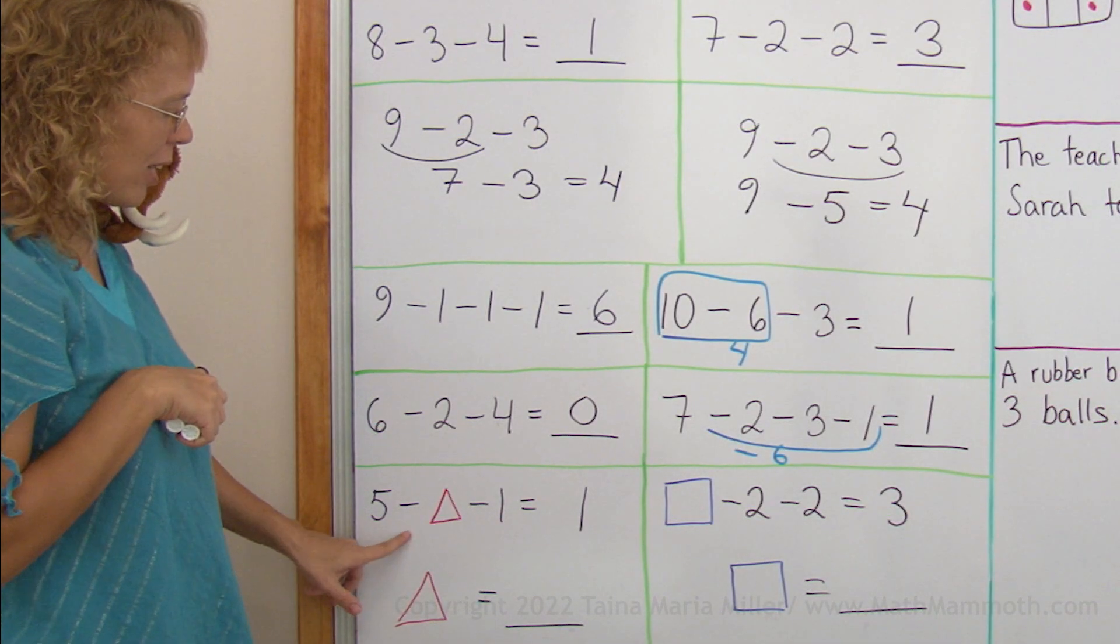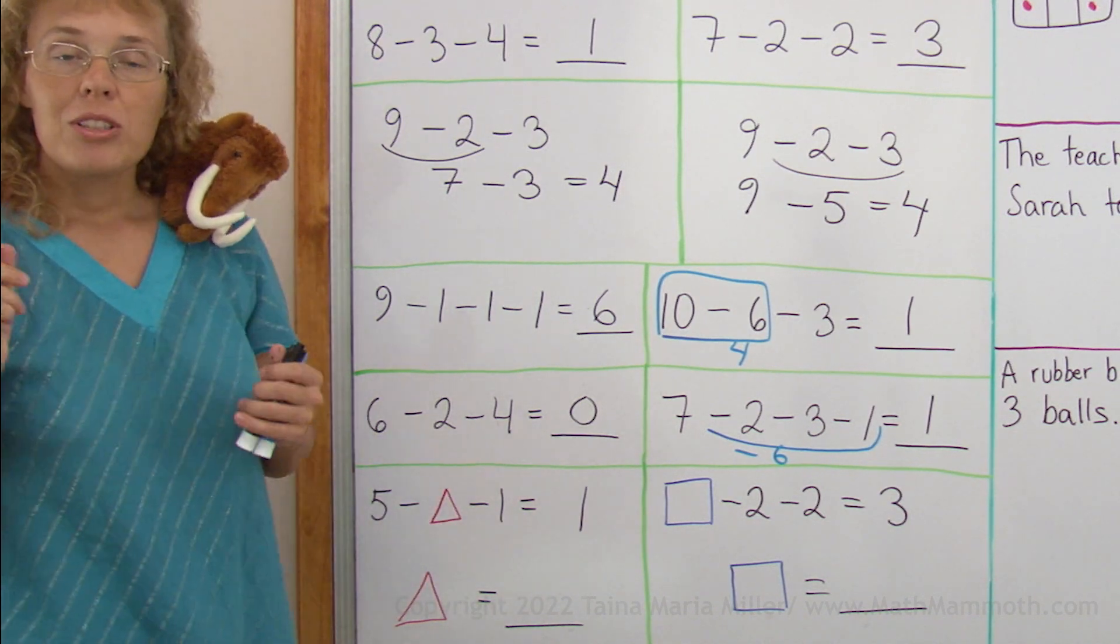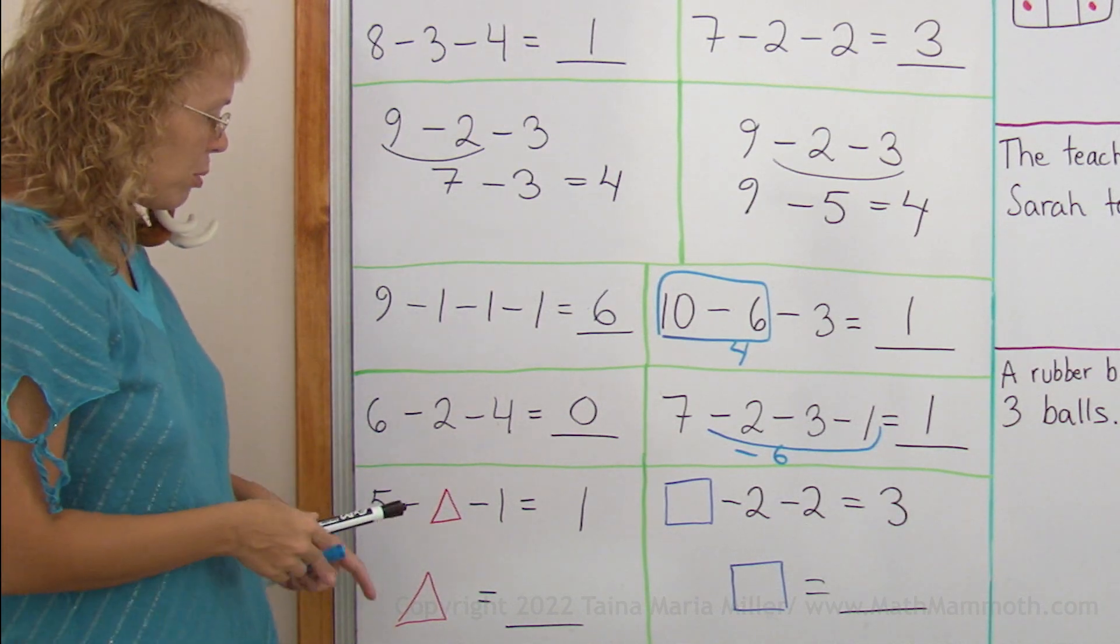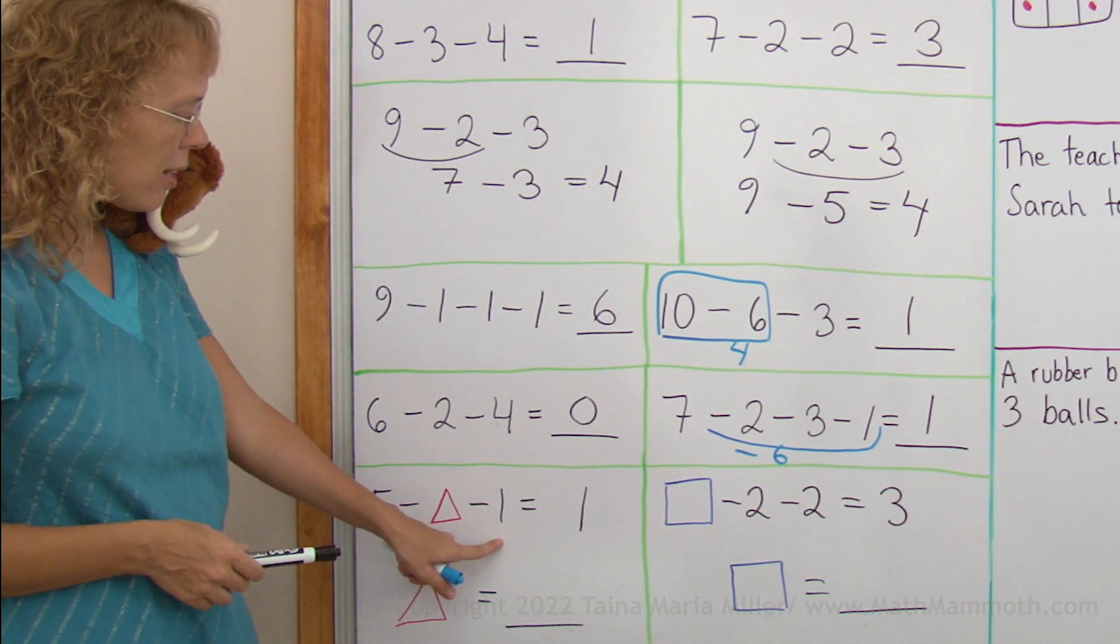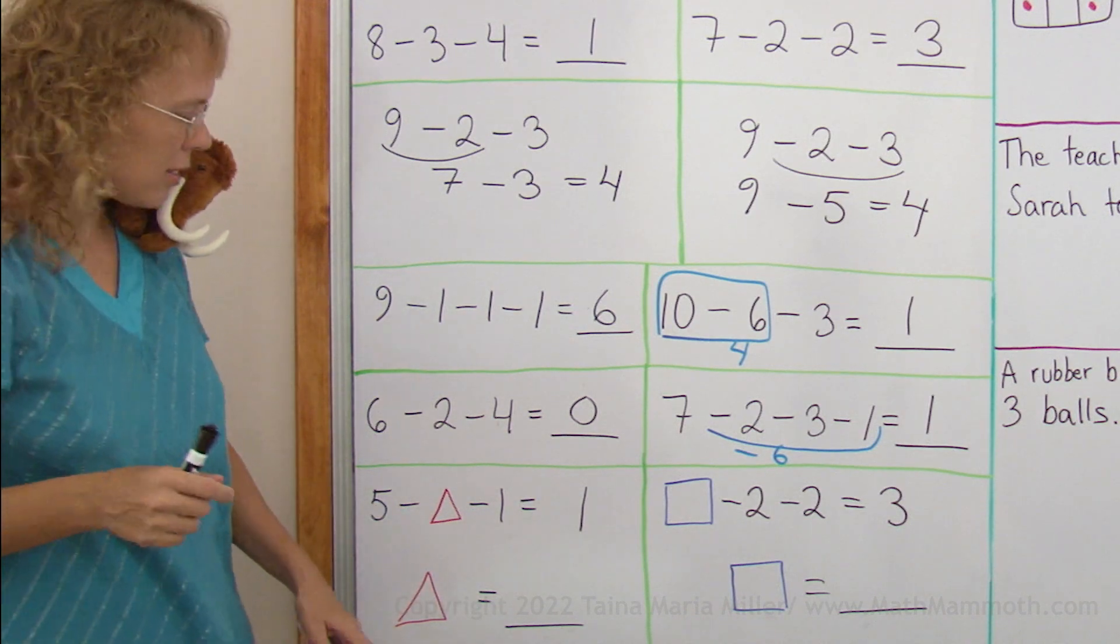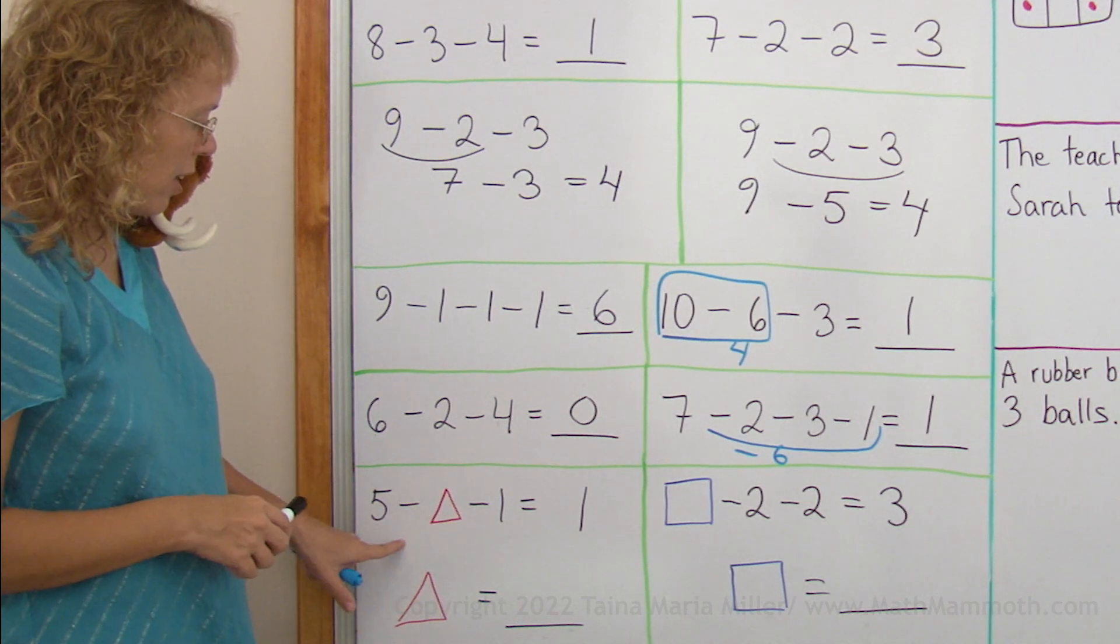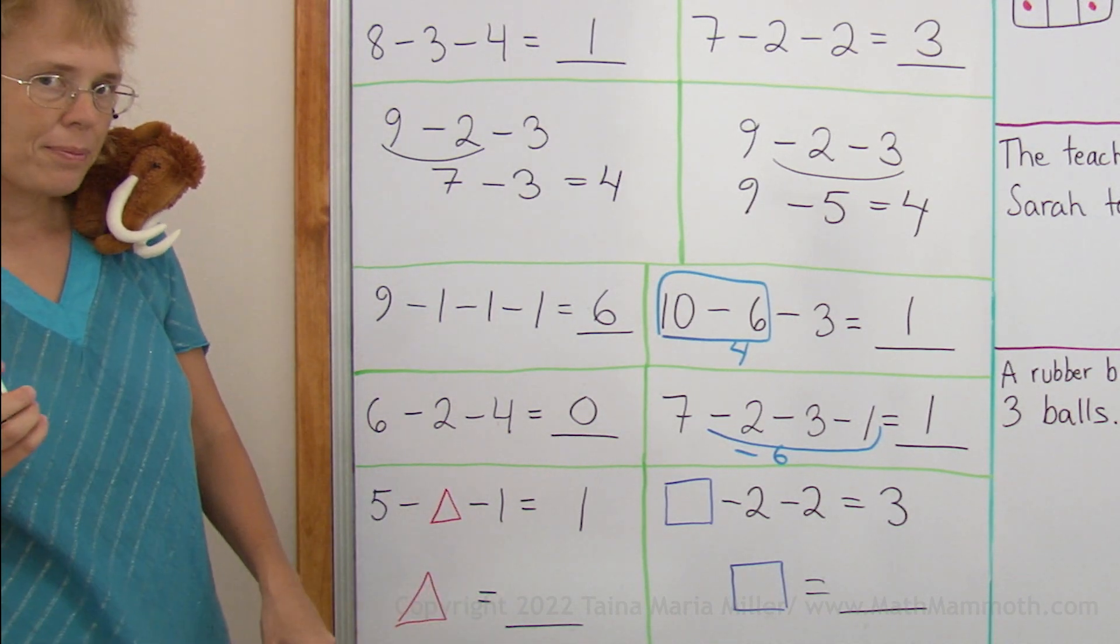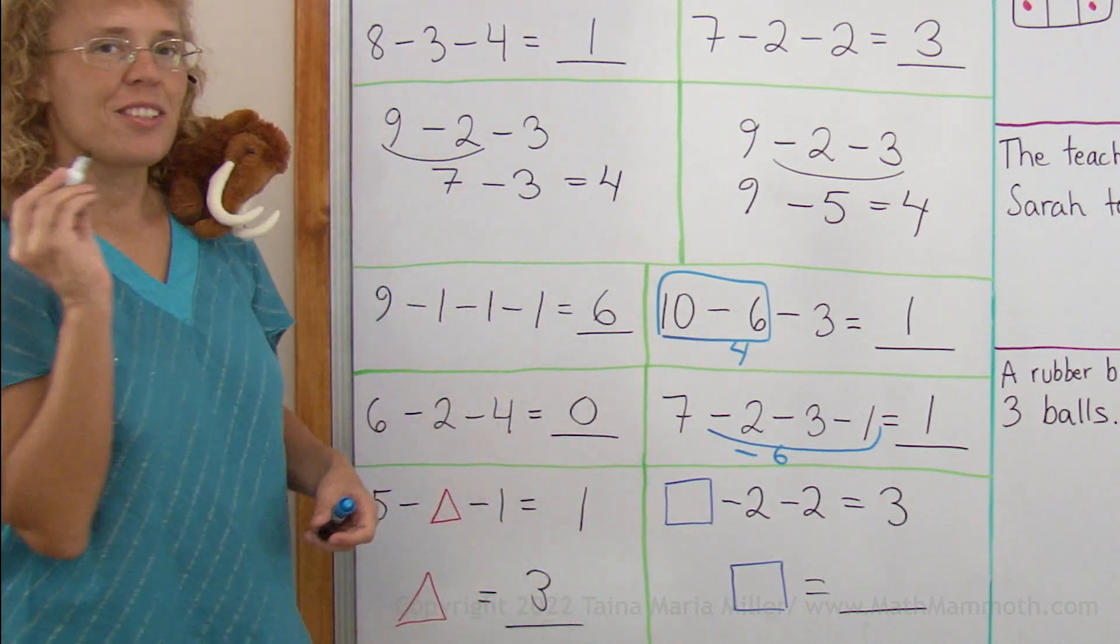5 minus something minus 1 equals 1. What you can try is just guess. Guess some number. Put 4 there. Does it work? 5 minus 4 minus 1. That would leave 0. Try something else. Try 3 or 2. Let's try 3. 5 minus 3 minus 1. Does that work? Yes, it does. The triangle is 3.